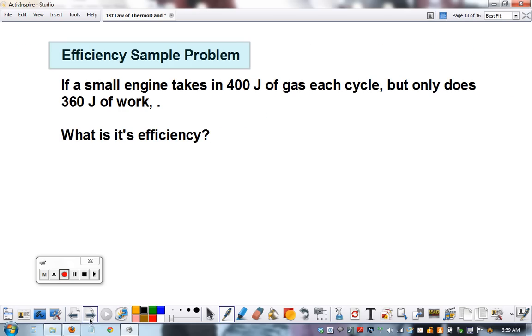Here's an example problem: a small engine takes in 400 joules of gas each cycle but only does 360 joules of work. What's the efficiency? Our formula is output over input times 100.